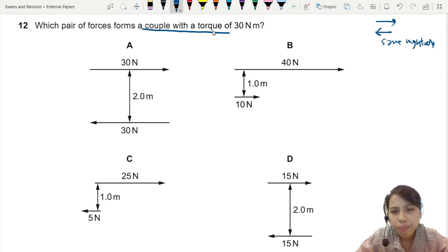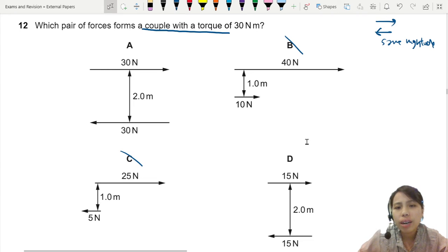So straight away, if you look at the choices, B and C are out because their force magnitude is so different. One so big, one so small.